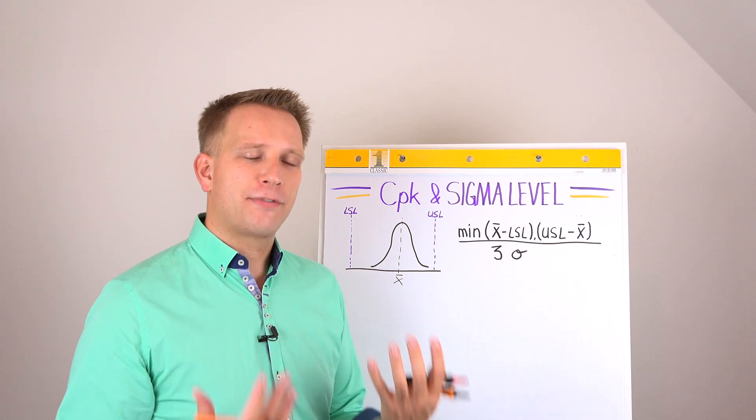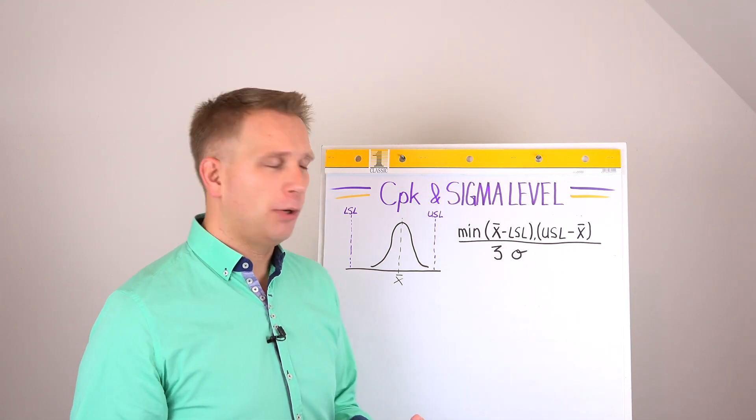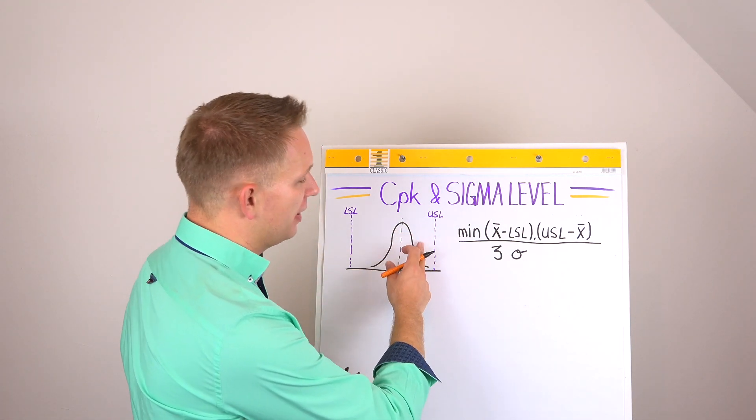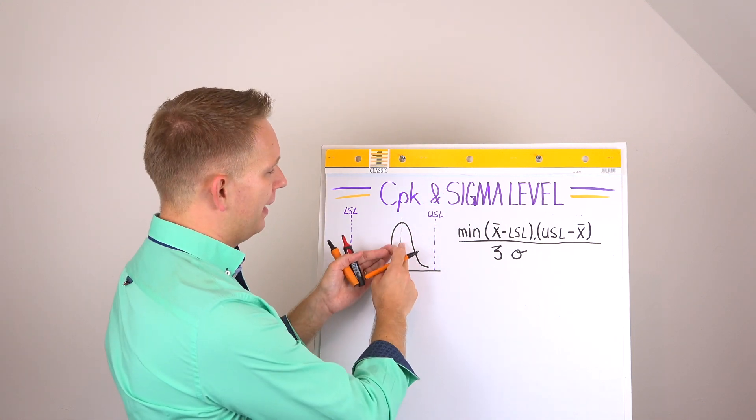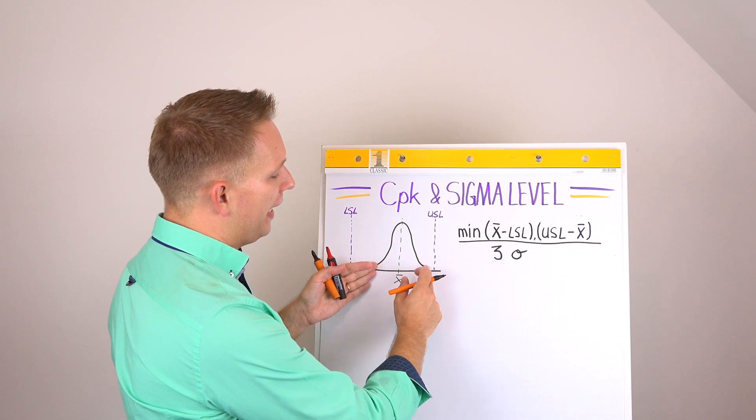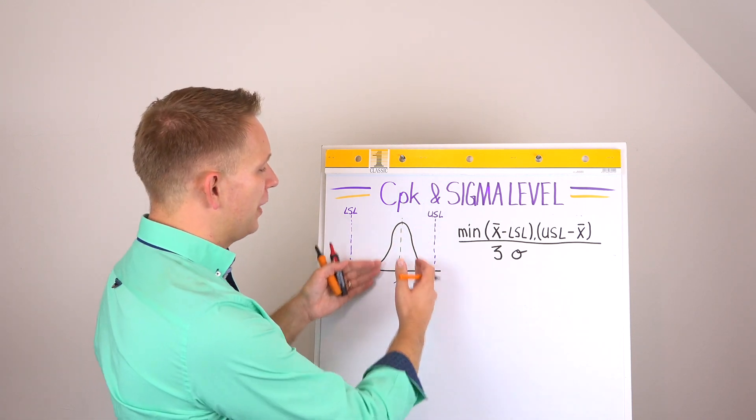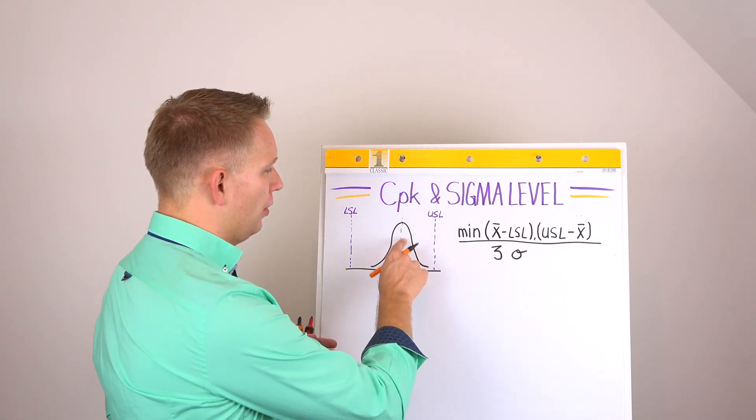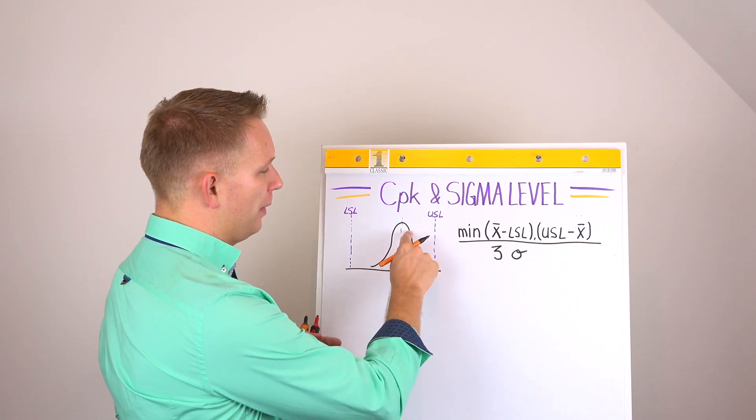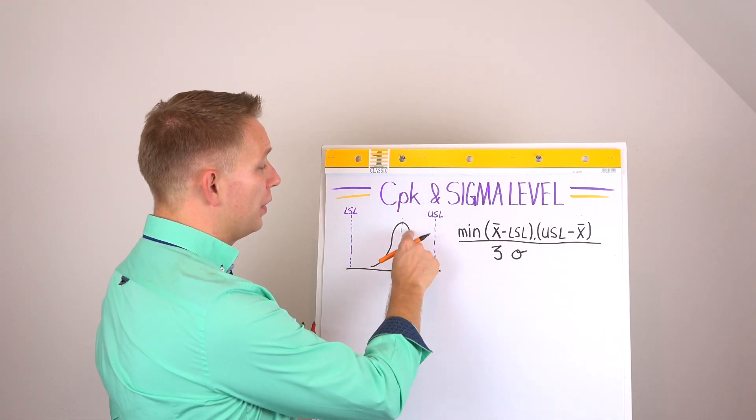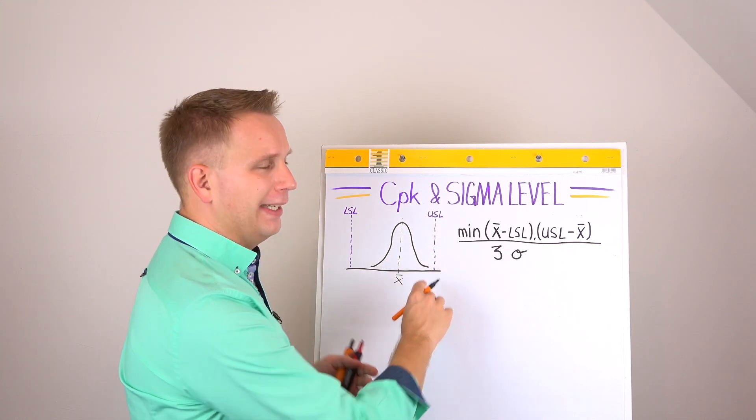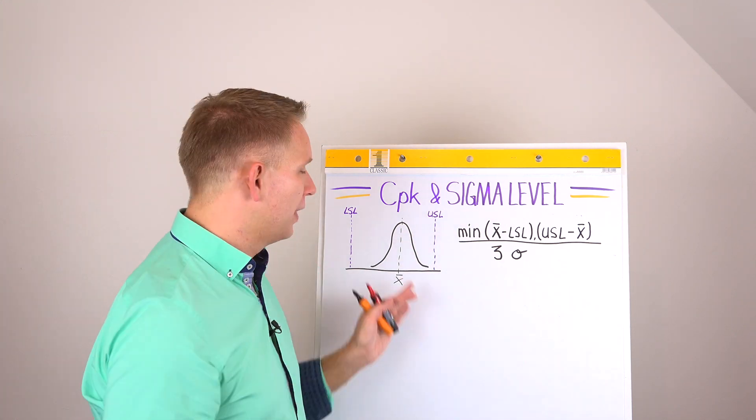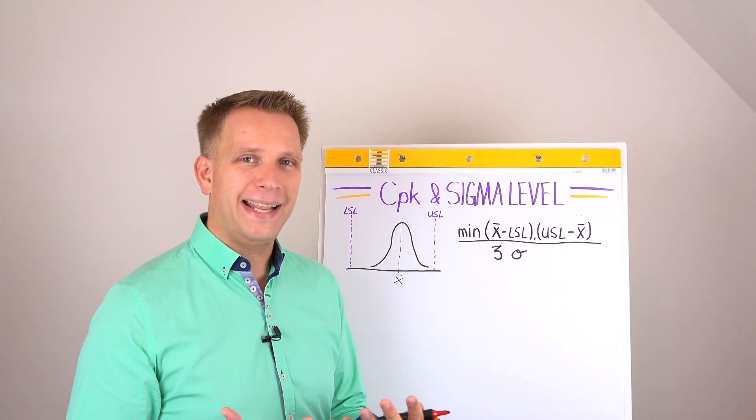But we also have some natural variation in our process. So we'll have a couple of products that are a bit bigger or a bit smaller. And the further you go away from the mean, the fewer products you will see. So a little bit away from the mean, a bit bigger for instance, we still have quite a lot of products. But when we get somewhere here, there's almost no product anymore that is so much bigger than our mean.